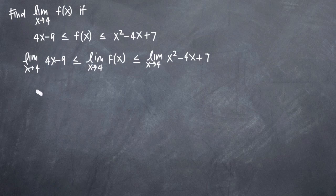That being said, this just becomes a basic limit substitution problem where we plug in the number we're approaching to each of our functions. So on the left hand side here with the 4x minus 9, we're just going to plug 4 in for x to get 4 times 4 minus 9.